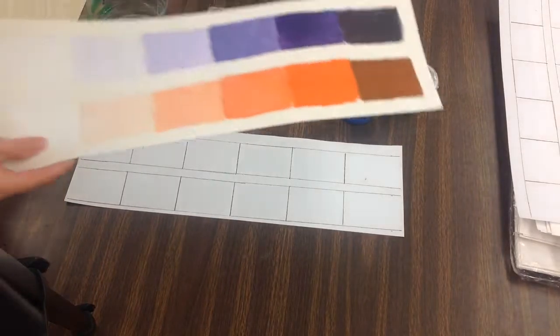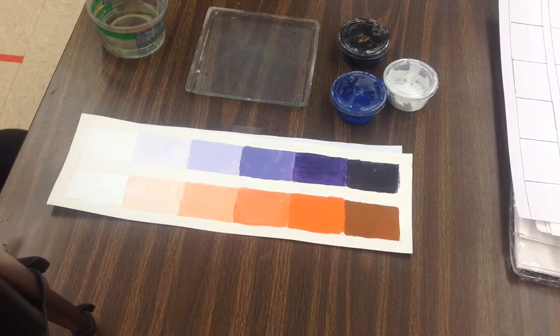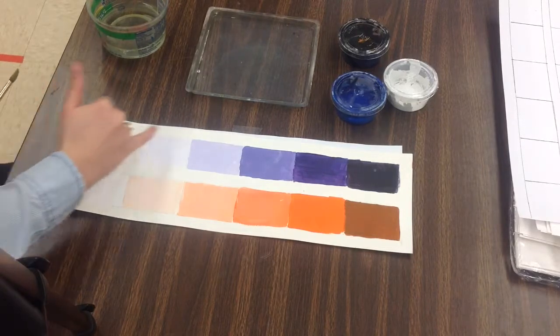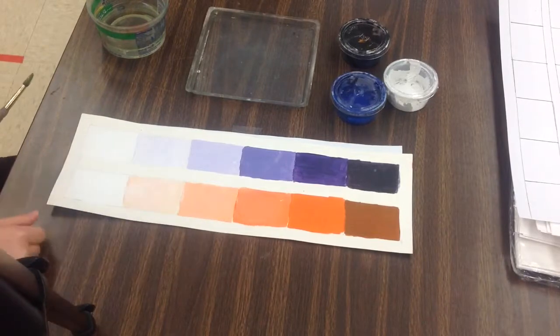You're practicing mixing different values of paint. This is an example of a value scale. You can see I go from my lightest purple all the way through my medium purple to my darkest purple, and the same thing with orange.